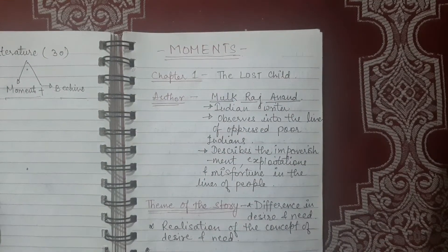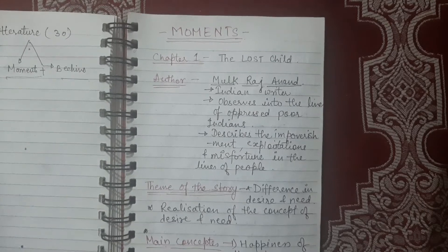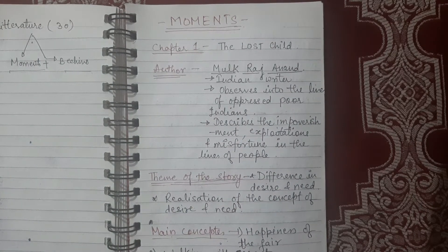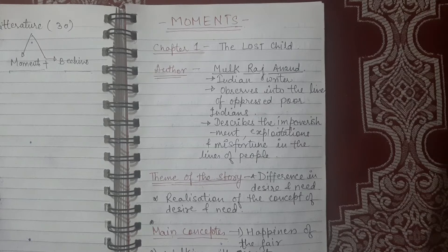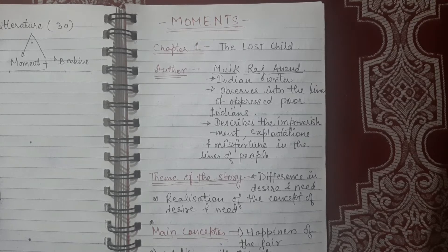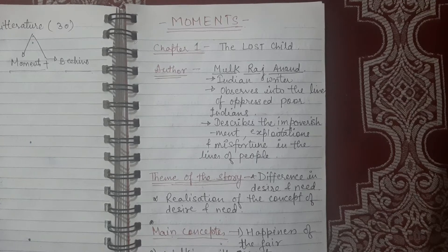As the title denotes, The Lost Child, that means there is some child which has been lost. Now we don't know where the child has been lost — we have to find out by reading the chapter. The author of this chapter is Mulkraj Anand. He is an Indian writer who observes the very deep perspectives of the lives of poor Indian people. He knows about impoverishment, exploitation, and misfortunes in the lives of people of India, and he describes each and every single smaller perspective of human lives.